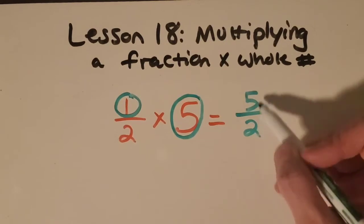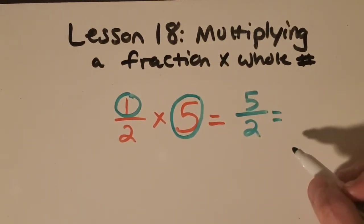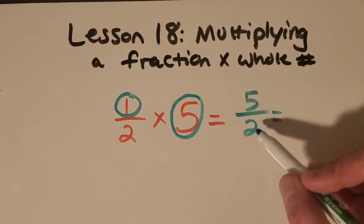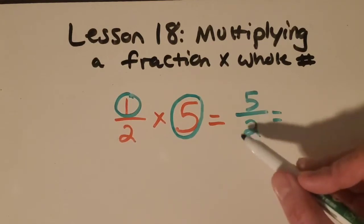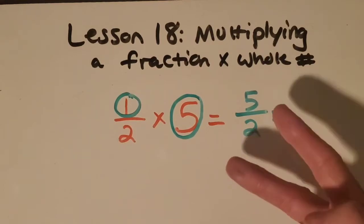And now I've got another improper fraction. So I need to simplify it by turning it into a whole number or a mixed number. So let's think about twos now or halves. How many halves does it take to make a whole? Okay, great. Two.